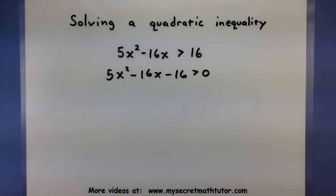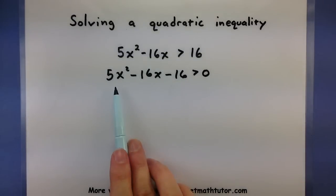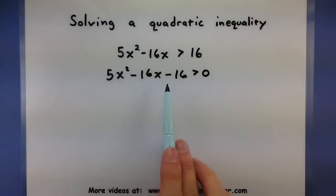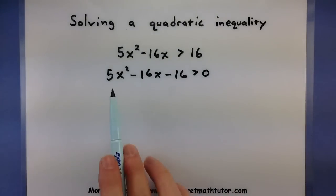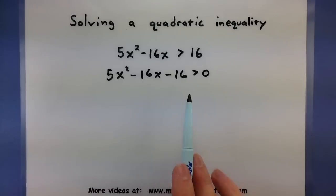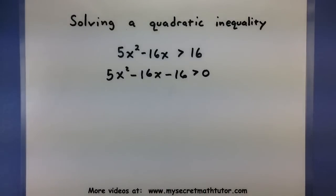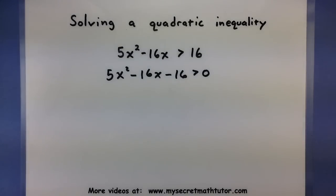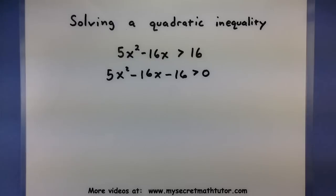The second thing you want to check for is to make sure that your powers are in descending order. That means start with the largest and go all the way until you have just the constant. If it looks something like that, now we want to try and find out where this is equal to zero.